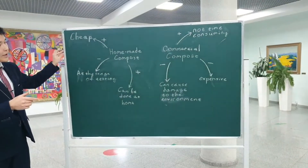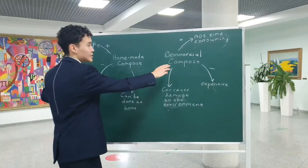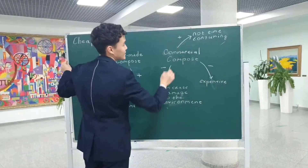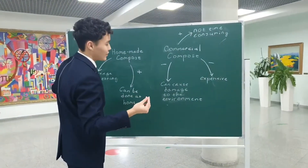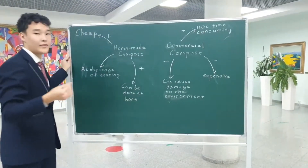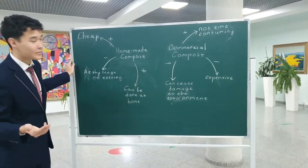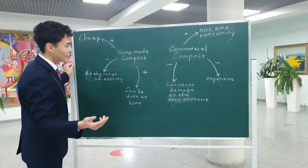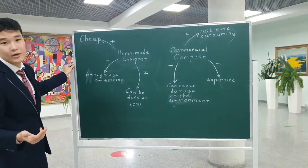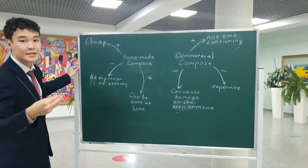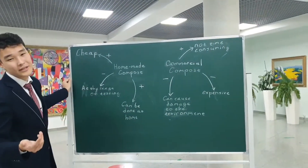I'd like to compare homemade compost and commercial compost. Starting with commercial compost: the plus is it's not time-consuming, but the minus is it can cause damage to the environment and it's quite expensive. For homemade compost, the positives are that it's cheap and can be done at home because the reagents are inexpensive and everyone has access to them. The minus is that it's not tested yet.